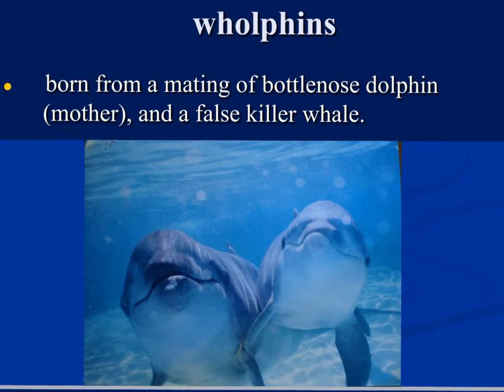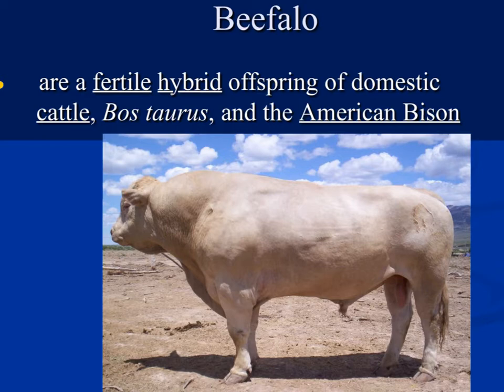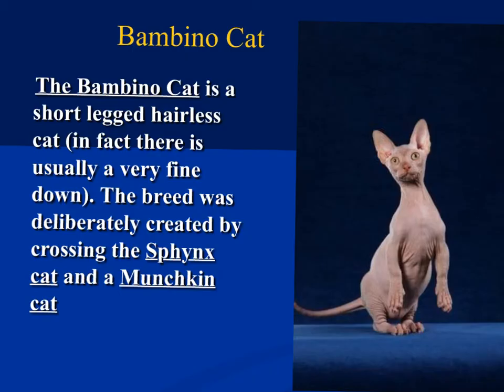Moving along, you can see a wolphin. A wolphin is a cross between a false killer whale and a bottlenose dolphin. Here we have a beefalo, which is a cross between domestic cattle and the American bison.